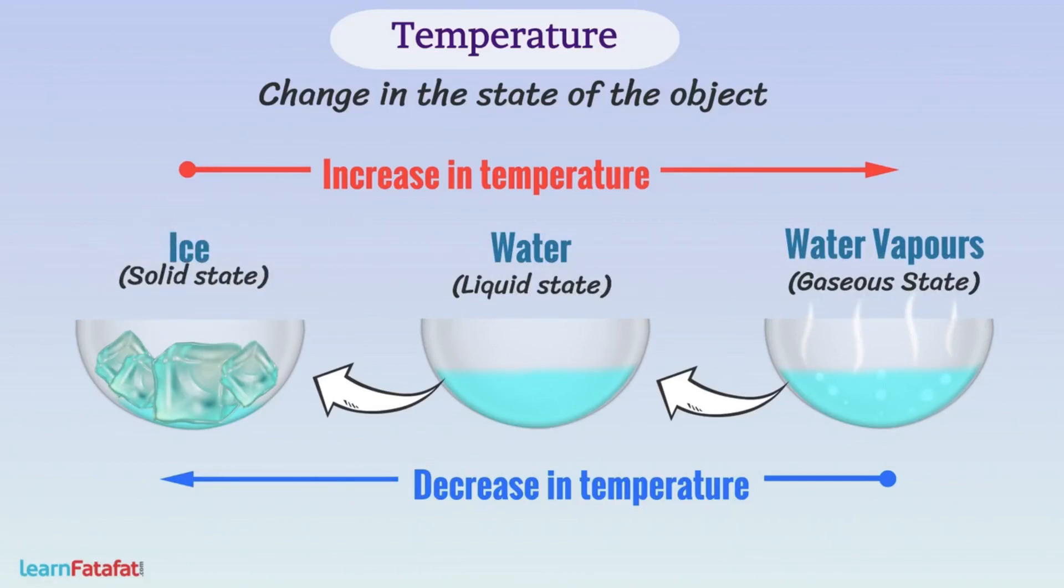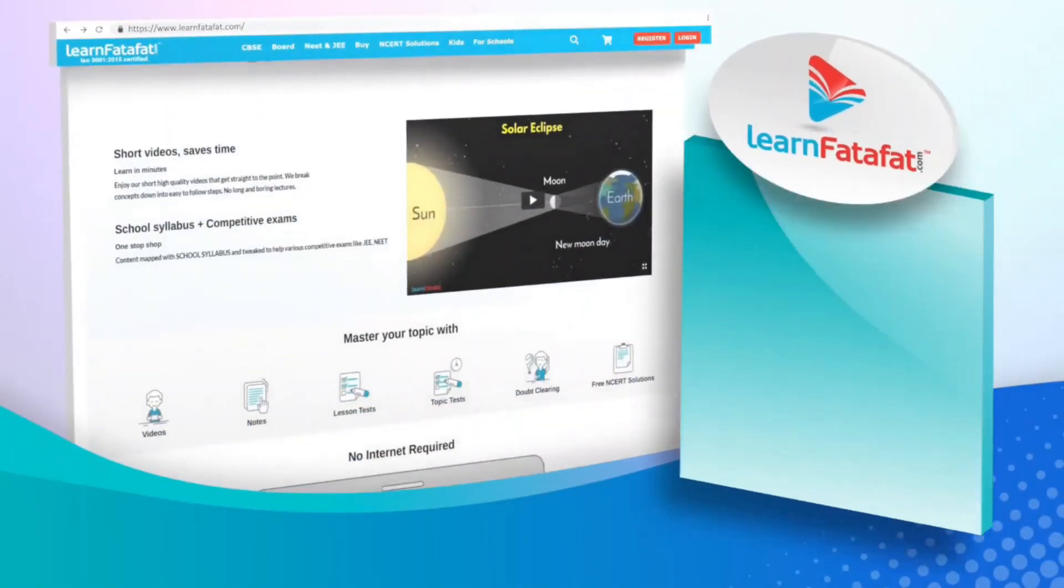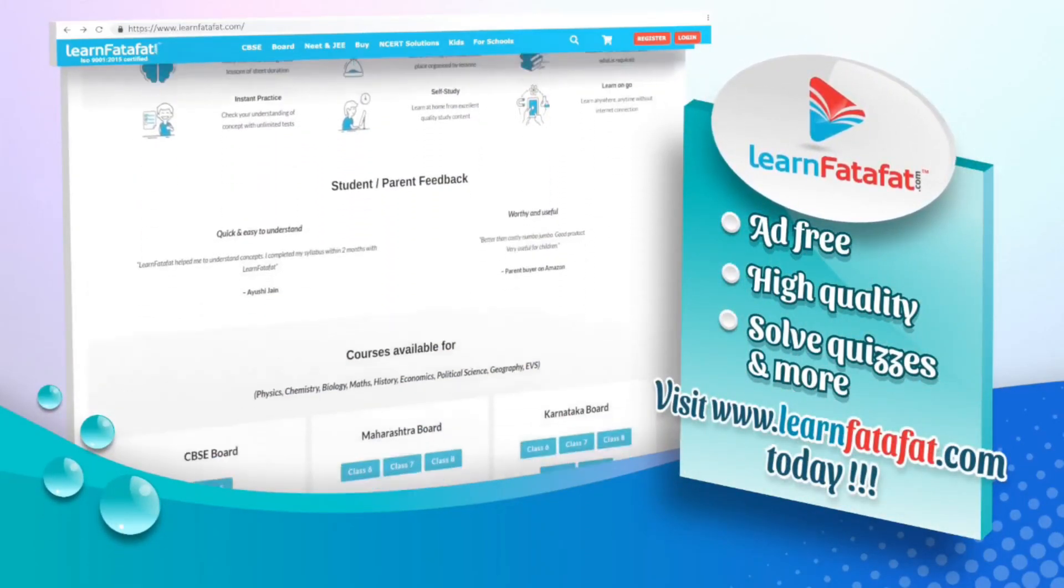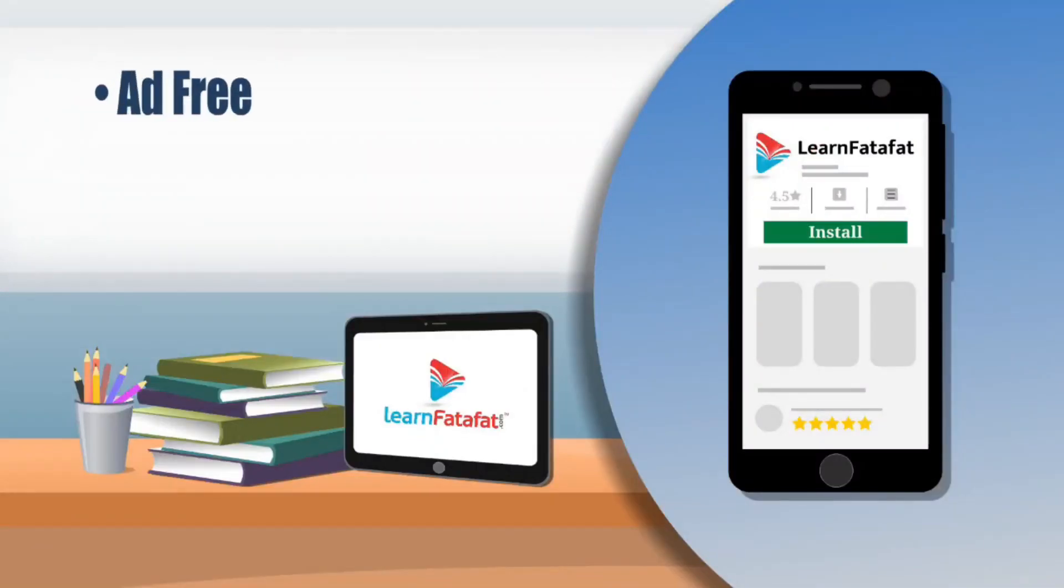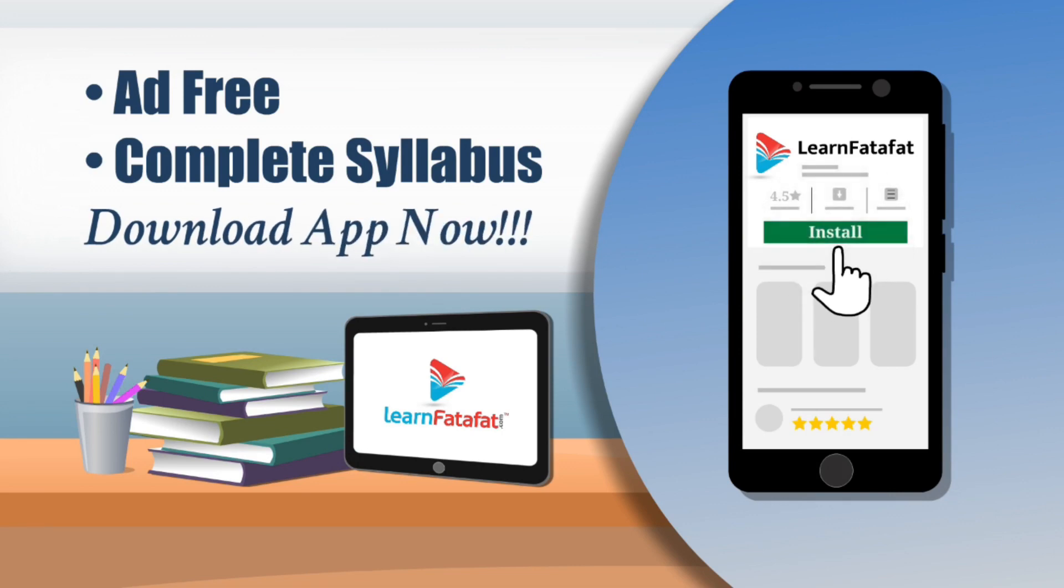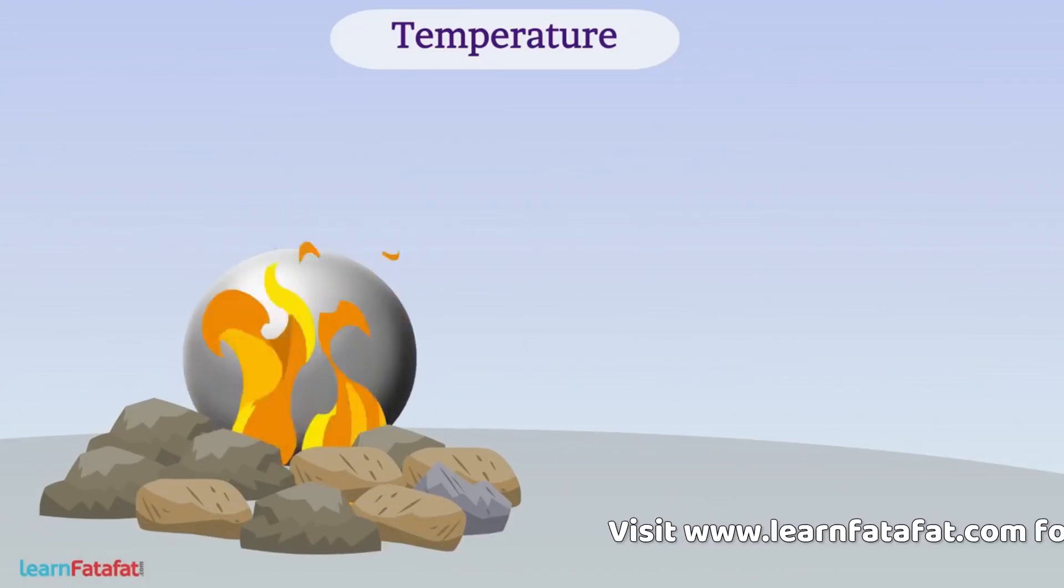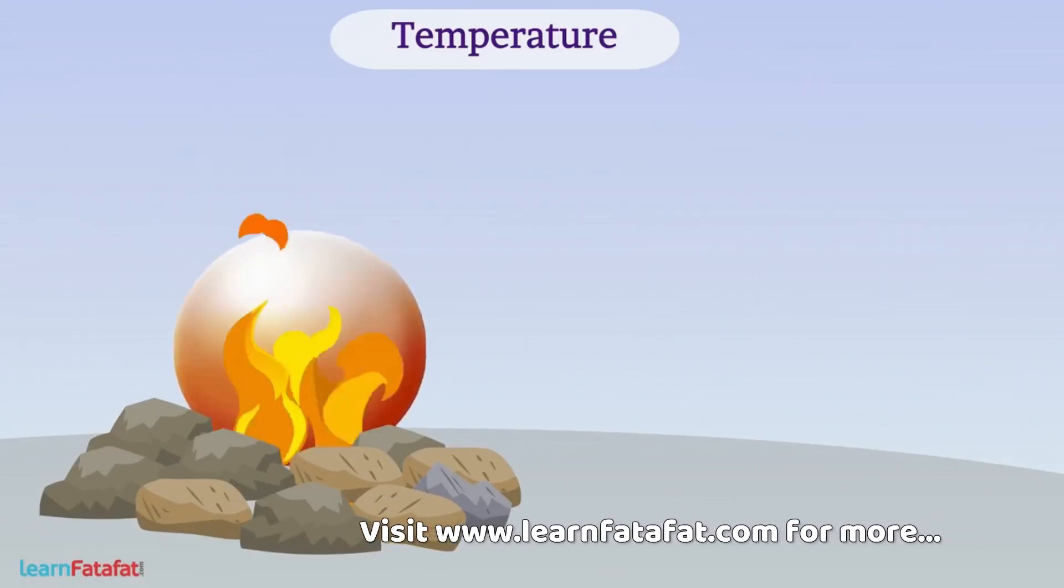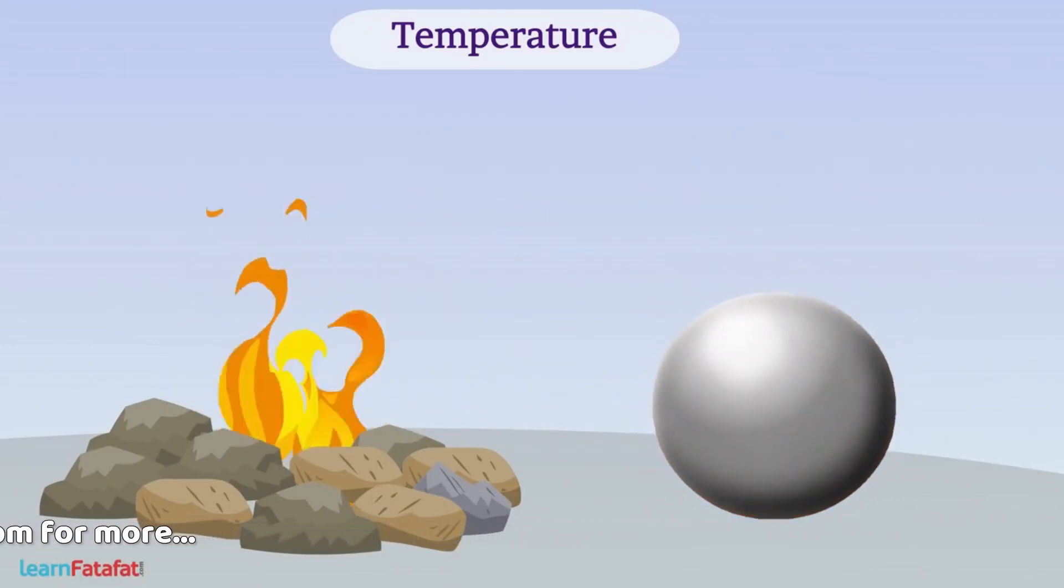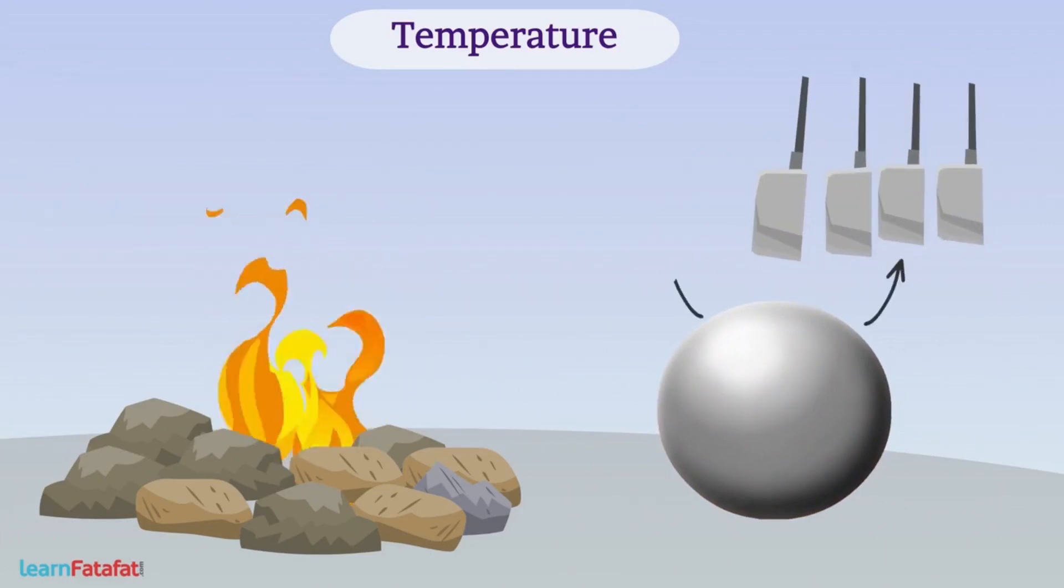Temperature also causes change in shape of objects. For example, heating an object like metal causes it to expand, while reducing the temperature causes it to shrink. By increasing temperature, it is possible to give a desired shape to a material.